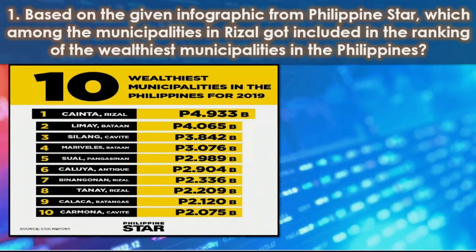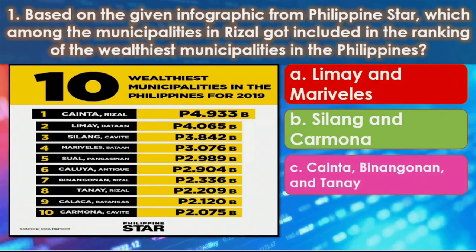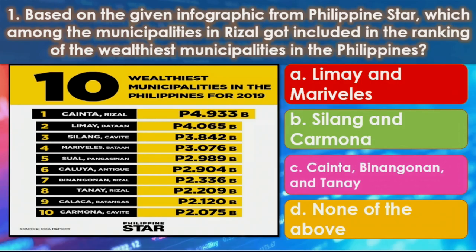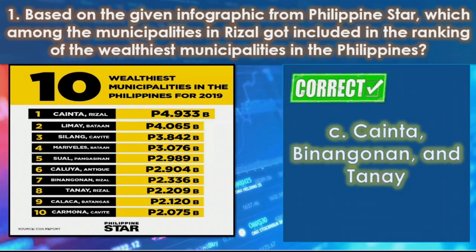Number 1. Based on the given infographic from Philippine Star, which among the municipalities in Rizal got included in the ranking of the wealthiest municipalities in the Philippines? A. Limay and Maravilis. B. Silang and Carmona. C. Cainta, Binangonan, and Tanay. D. None of the above. The correct answer is C — Cainta, Binangonan, and Tanay are the municipalities in Rizal that got included.